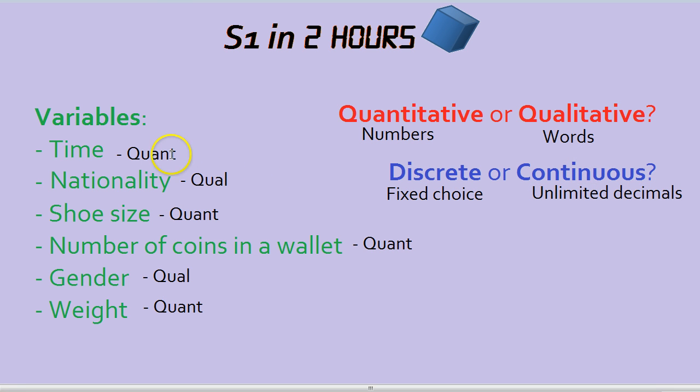Let's look at some examples. Time could go on for unlimited decimals. You could have 5.2895 seconds, or you could continue forever with the decimals, so it's continuous.